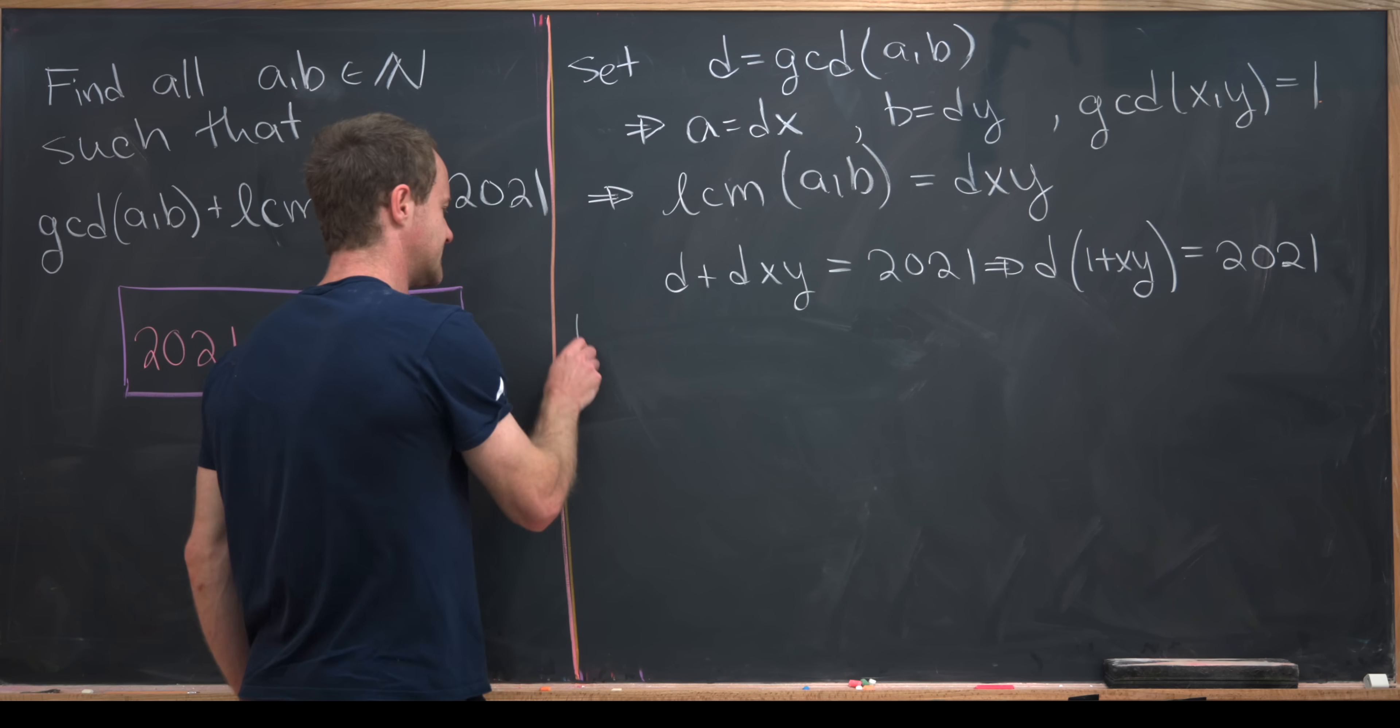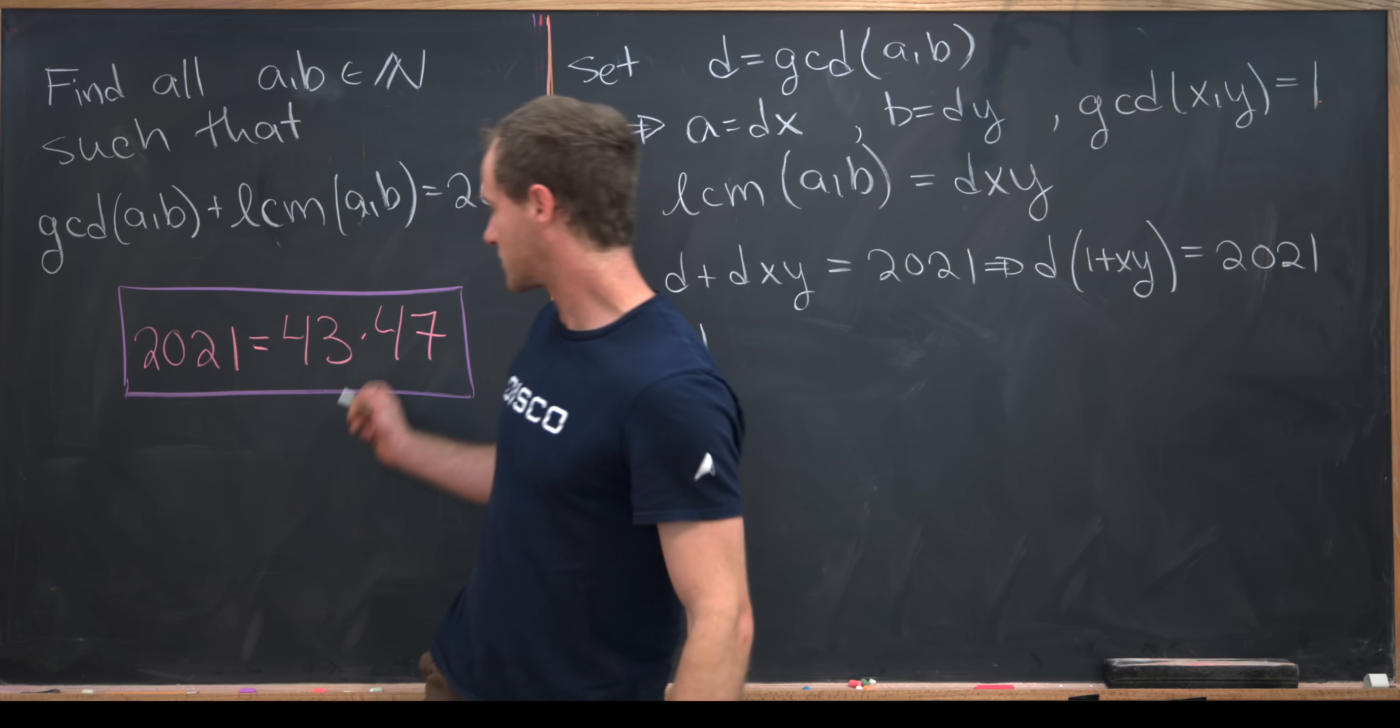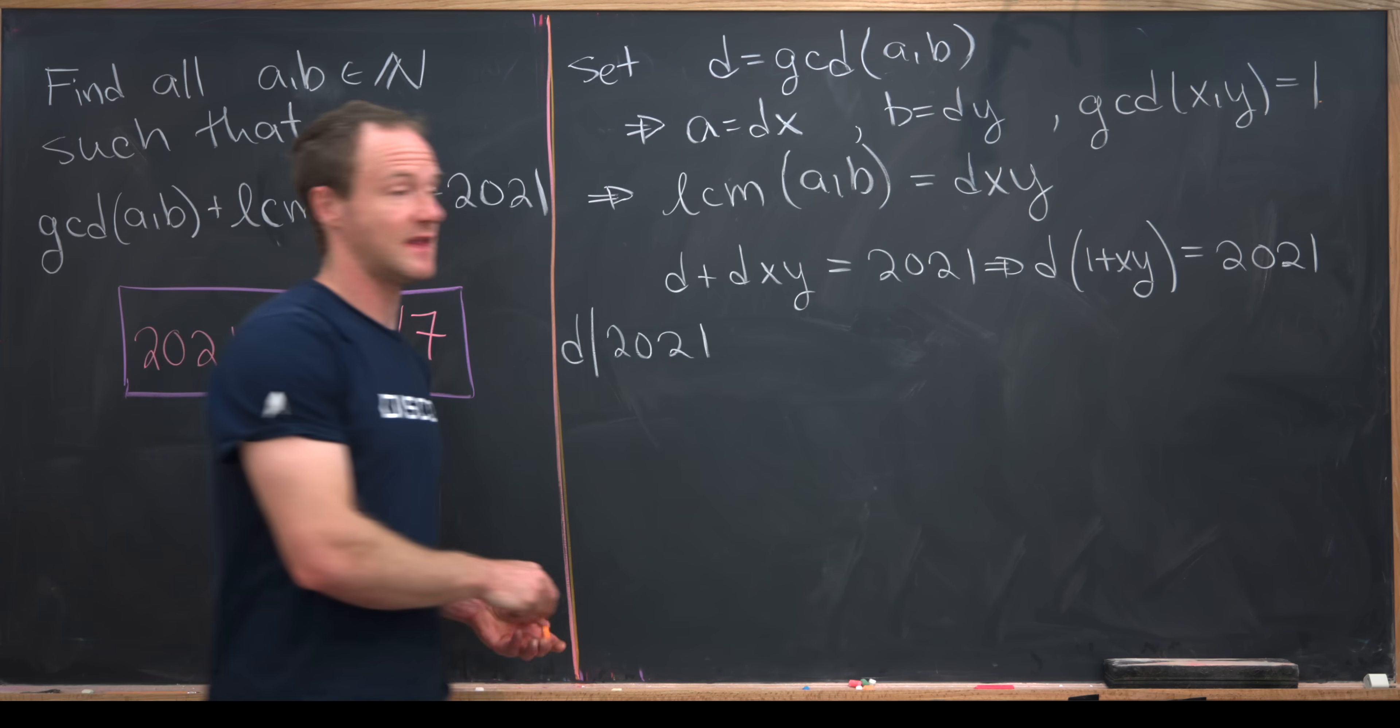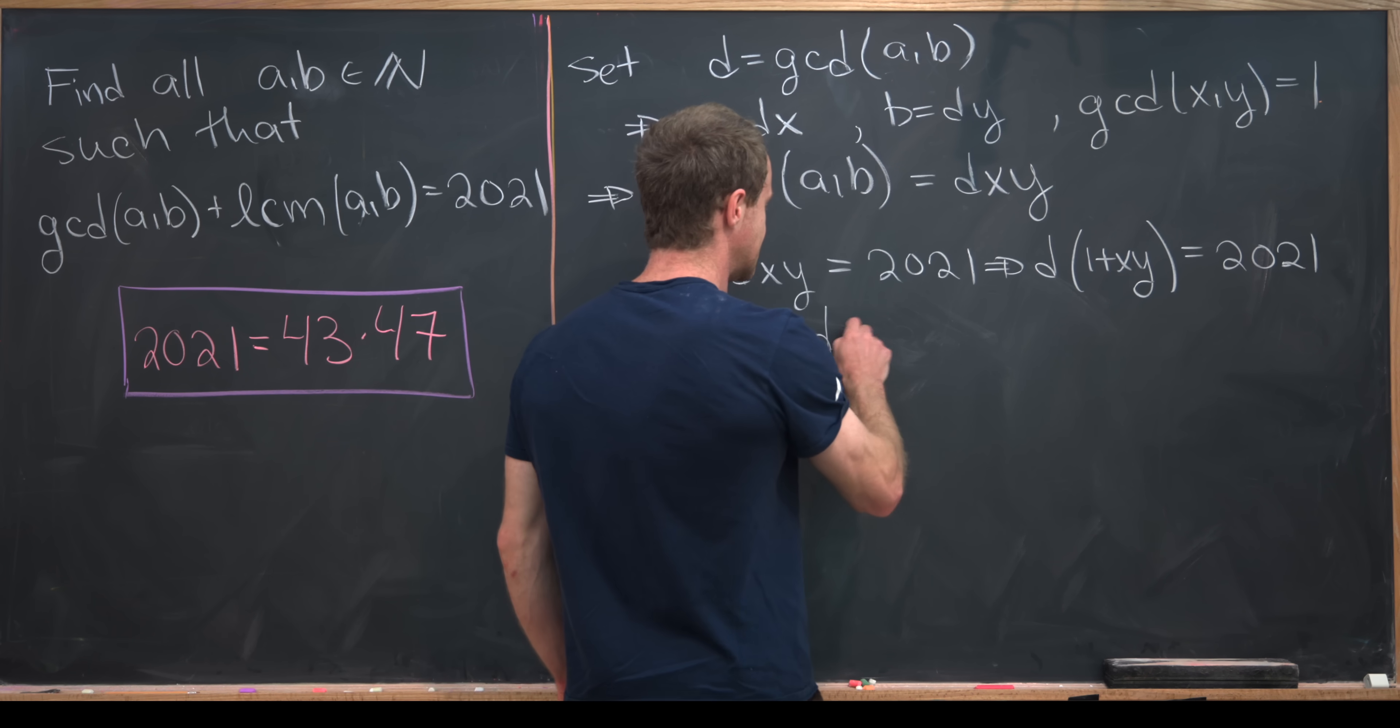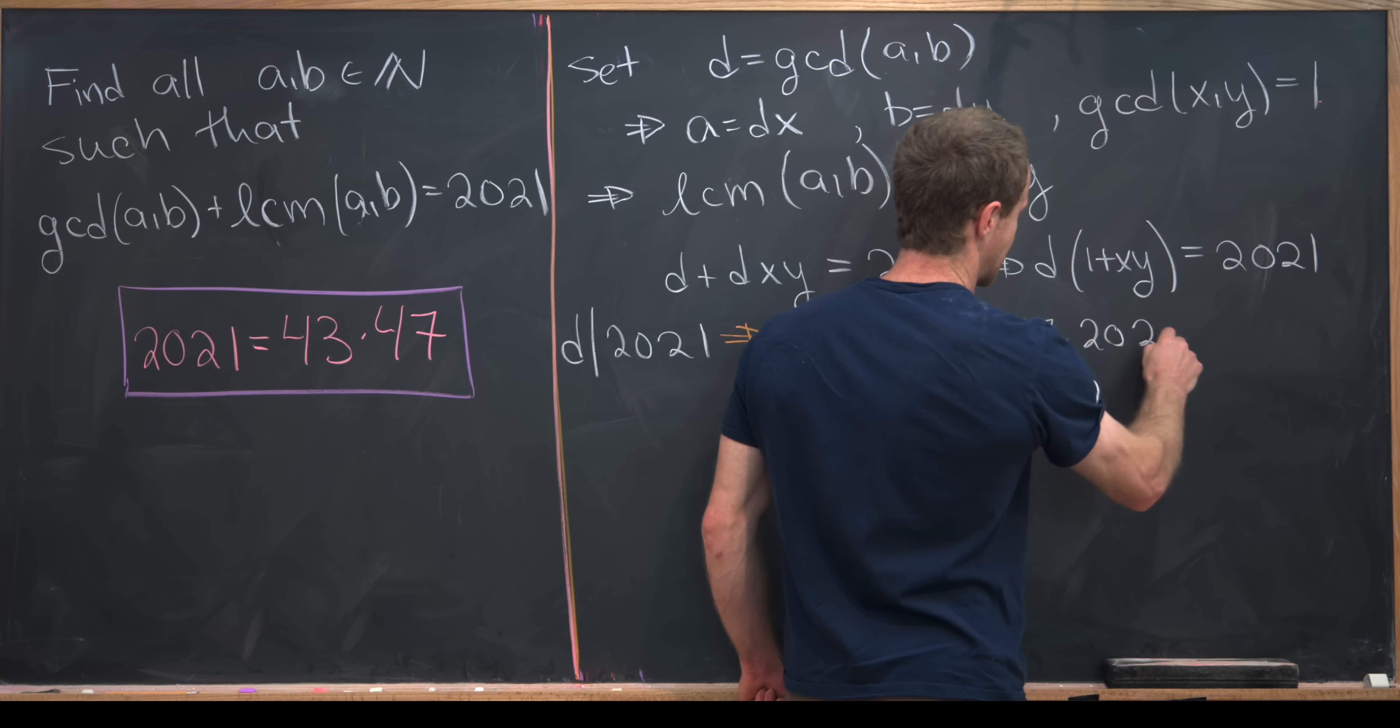Notice that tells us that D in fact divides 2021. But this prime factorization of 2021 gives us only so many values for D given that it is a factor of 2021. It can be 1, 43, 47, or the whole thing. Let's write all of those cases here. We've got D is now from the set 1, 43, 47, and 2021.